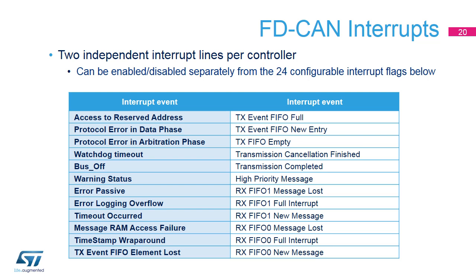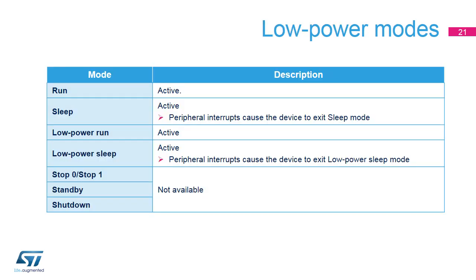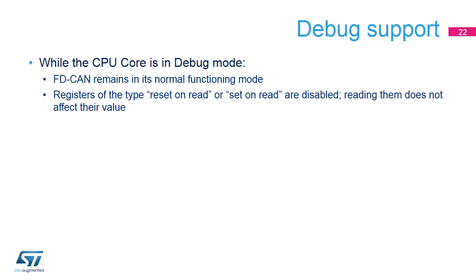An FDCAN controller peripheral provides two independent interrupt lines. This slide shows the complete list of possible interrupt events. Here is an overview of the FDCAN subsystem low-power configuration modes. The device is not able to perform any communications in stop or standby modes; it is important to ensure that all CAN traffic is completed before the peripheral enters stop or standby modes. While the CPU core is in debug mode, i.e. stopped at a breakpoint, FDCAN remains in its normal functioning mode. In particular, reception continues as normal and this may lead to reception overrun errors when FIFOs or buffers are full. Registers of the type reset-on-read or set-on-read are disabled; reading them does not affect their value.